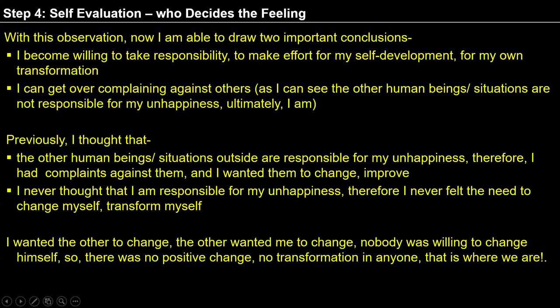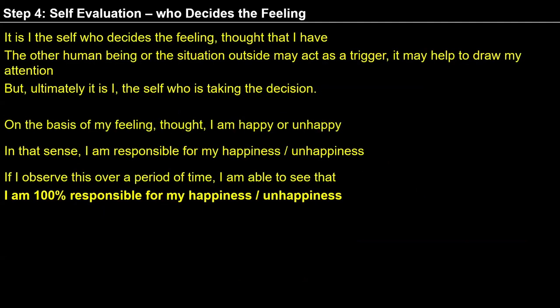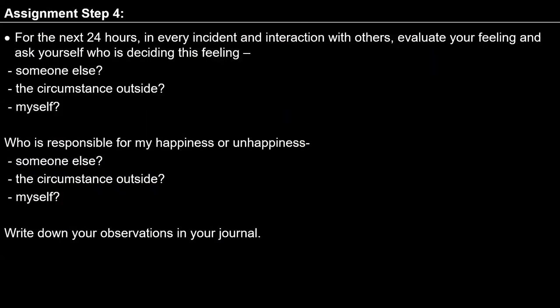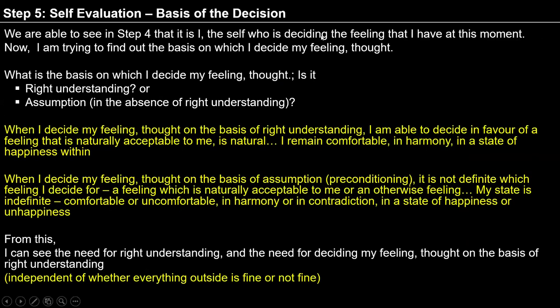With step 4, I can see that I am 100% responsible for my feeling, 100% responsible for my happiness and unhappiness. It is me who takes decision, it is me who decides feeling. The feeling of opposition or feeling of relationship — which feeling I have to continue is my decision, and I am taking this decision in my imagination. So it is me who is responsible for my happiness and unhappiness. In step 4 it becomes clear that I am responsible for my happiness and unhappiness.